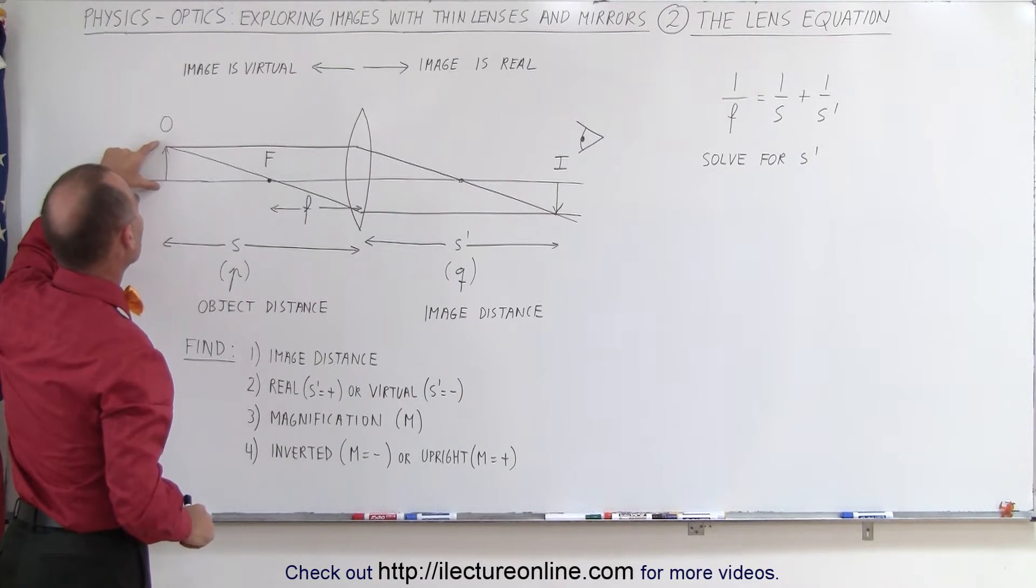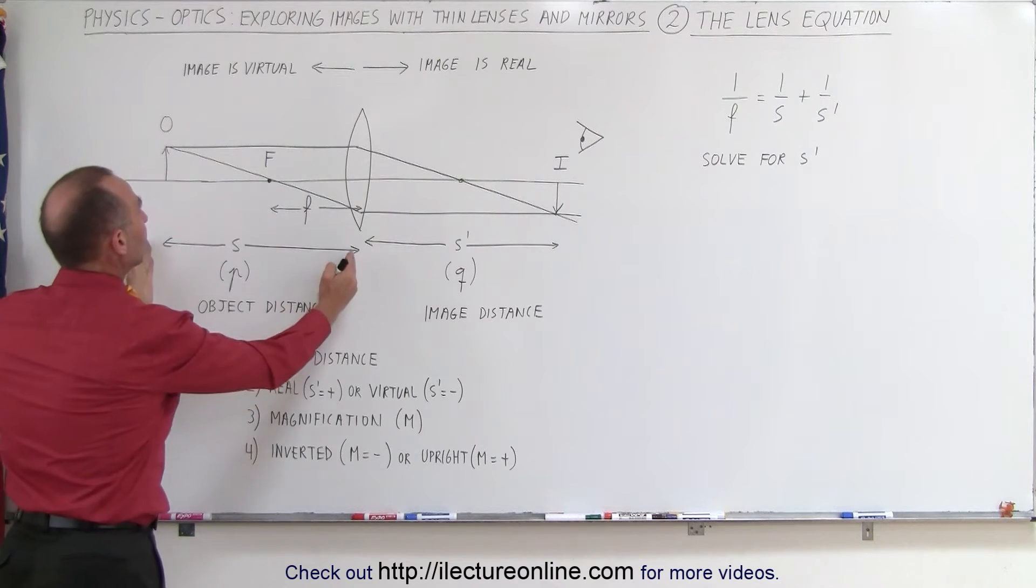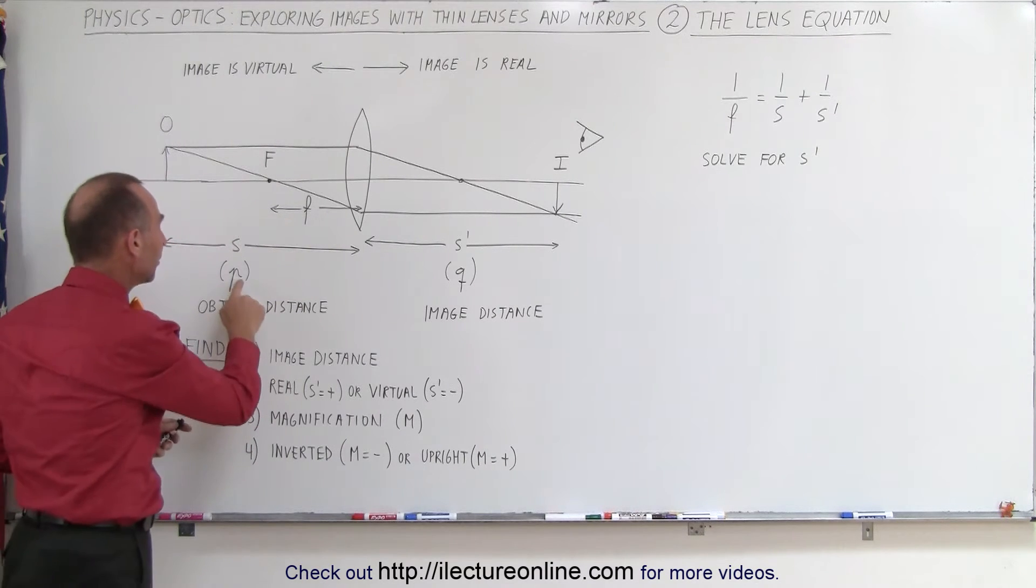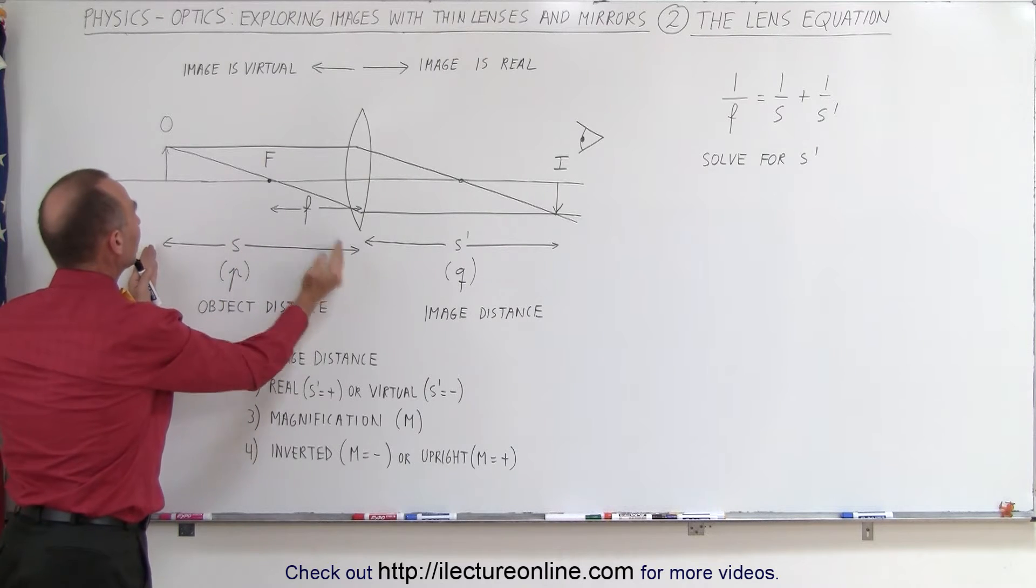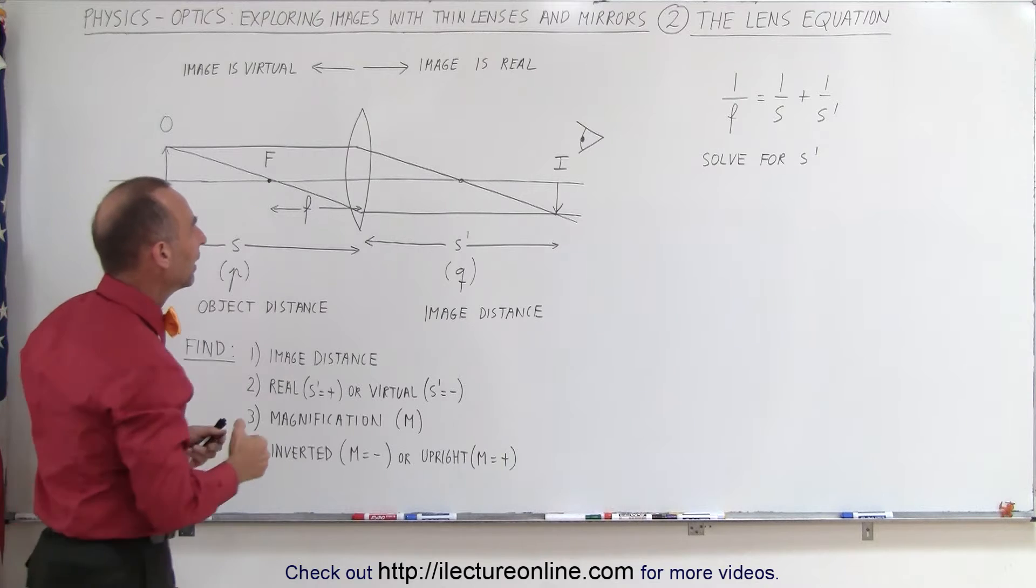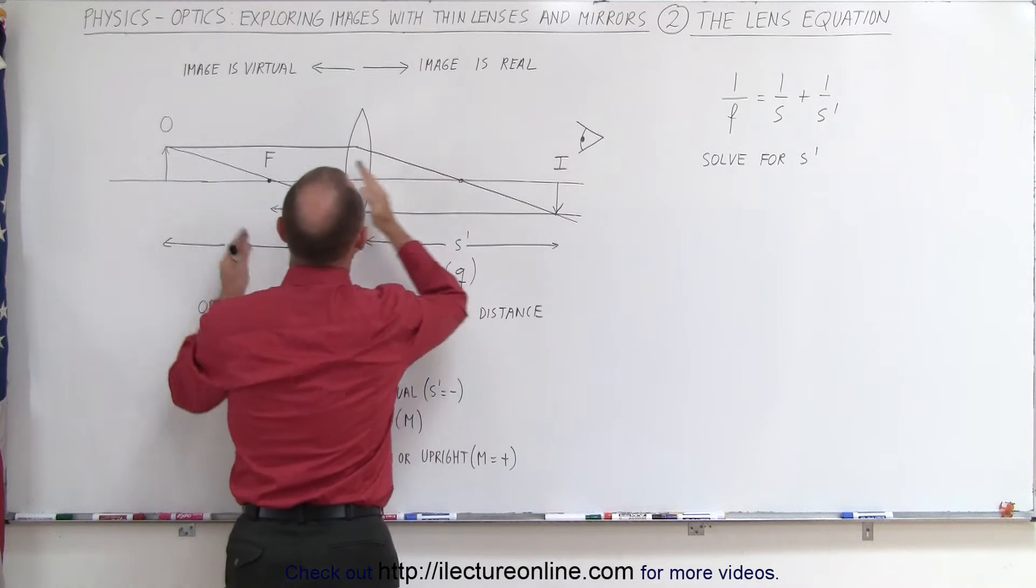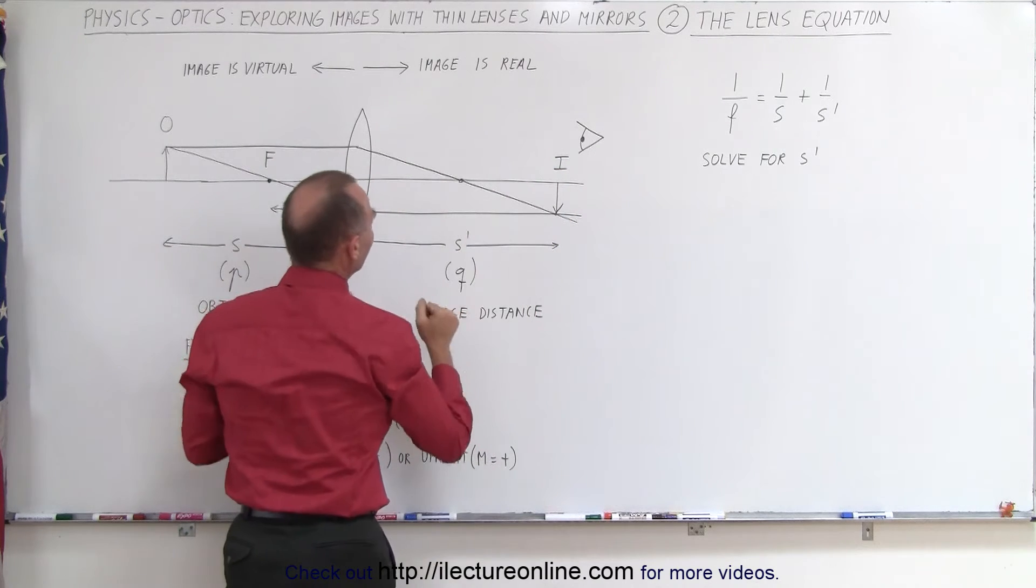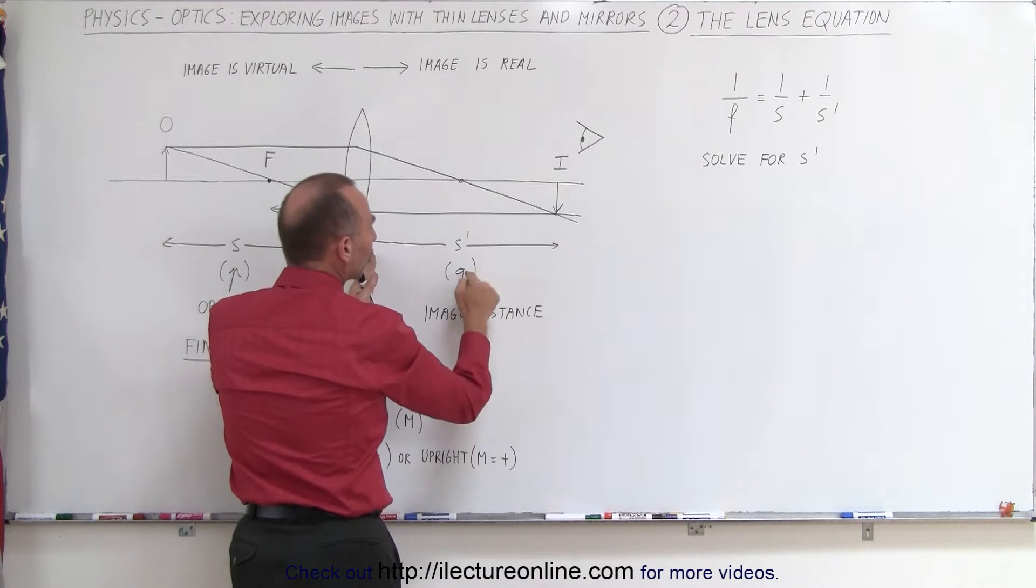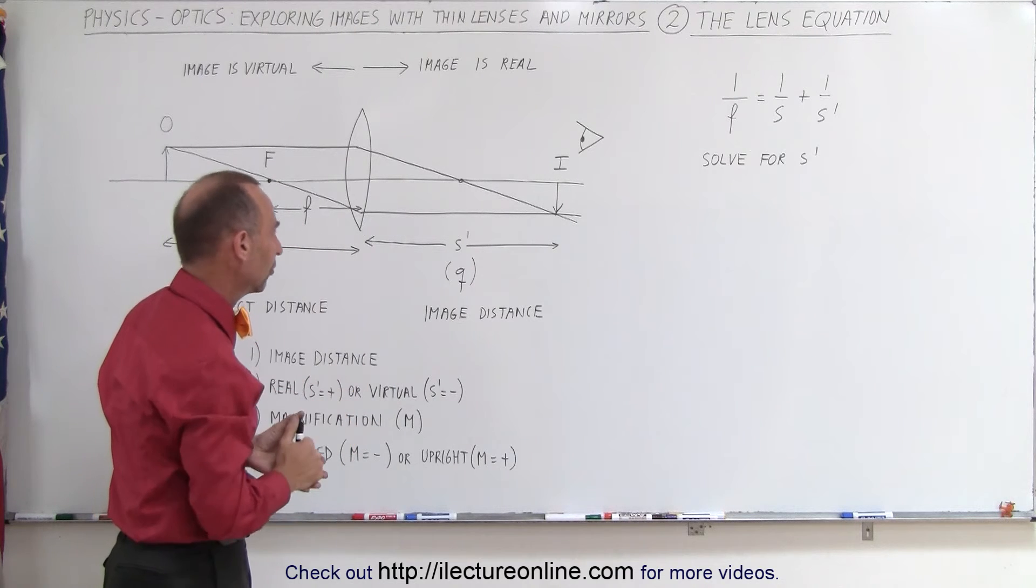Let's place the object here, this is the object height, we represent the object by the letter O, and the distance from the lens to the object is S. Now in some texts they'll actually use the letter P, so either P or S is the distance to the object, I will be using S because that's what I'm used to, and then let's say an image forms on the other side of the lens, therefore this becomes a real image because it's on the other side of the lens, and the distance to the image is called S' or Q. Some texts will actually use the letter Q for the distance, others will use S' for the image distance.